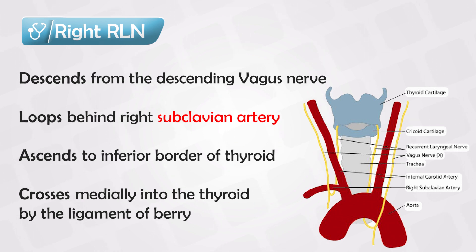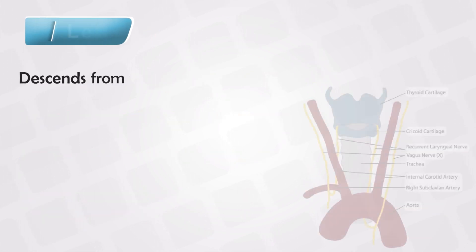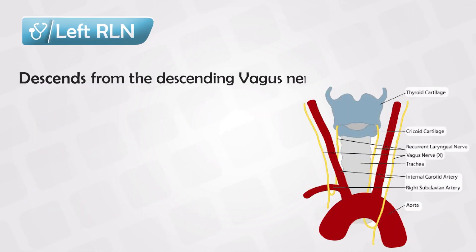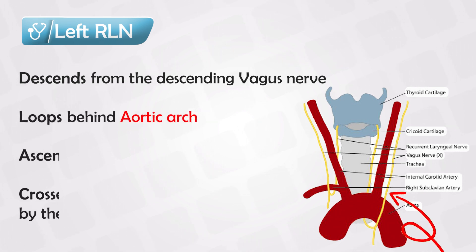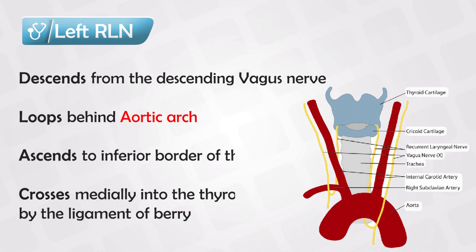It passes between the two parathyroid glands, the superior and inferior. On the left side, the left recurrent laryngeal nerve loops below the aortic arch and follows a similar pattern.